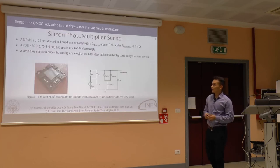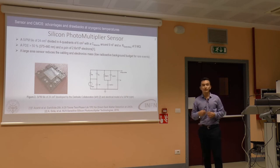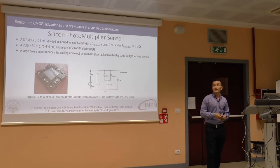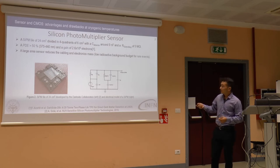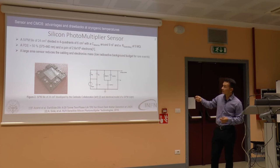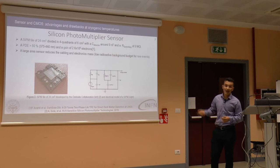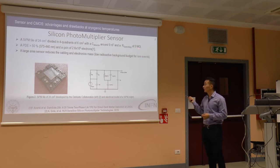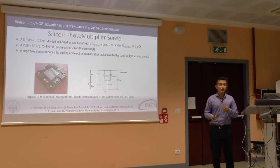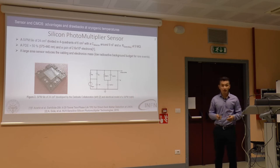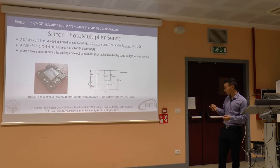The silicon photomultiplier (SiPM) sensor is the sensor used in the experiment and for testing our front-end. It is 24 cm² divided into four quadrants of 6 cm² each, with a total detector capacitance of 9 nanofarads and a quenching resistor of 5 megaohms. This is the electrical model used to simulate the sensor in the CAD tool.